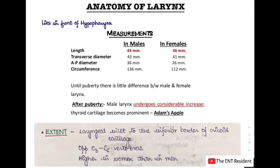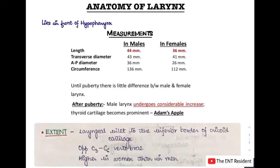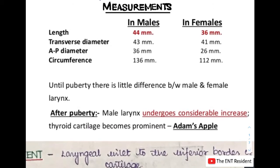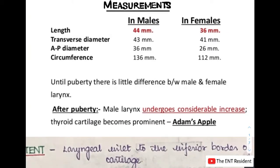In today's session we are going to be talking about the basics of the anatomy of larynx. We will be discussing the measurements of larynx, the difference between the male and female larynx dimensions, the extent of larynx, the divisions of larynx and what are the planes causing these divisions, blood supply, lymphatic drainage, and lastly the mucosal lining of larynx. The male larynx and female larynx have a huge difference in dimensions — mostly all of them are greater in males than in females.